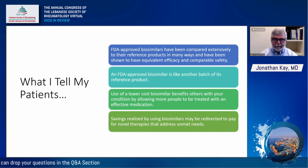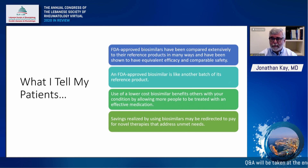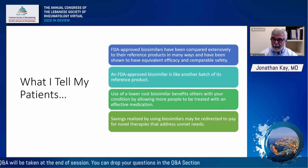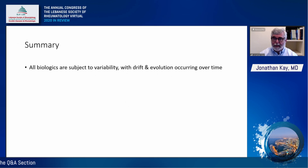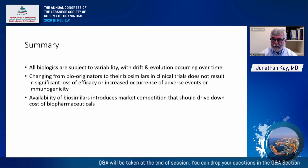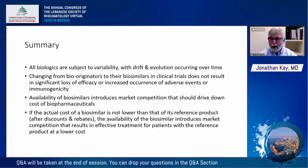What do I tell my patients? I tell them that biosimilars approved by the FDA have been compared extensively to their reference products and shown to have equivalent efficacy and comparable safety. An FDA-approved biosimilar is like another batch of its reference product, and using a lower-cost biosimilar benefits others by allowing more people to be treated. Savings realized from biosimilars may be redirected to pay for new treatments addressing unmet needs. In summary: all biologics are subject to variability, drift, and evolution; switching to biosimilars in clinical trials does not result in significant loss of efficacy, increased adverse events, or increased immunogenicity; and availability of biosimilars introduces market competition that drives down the cost of biopharmaceuticals.